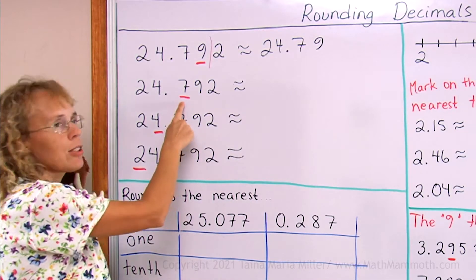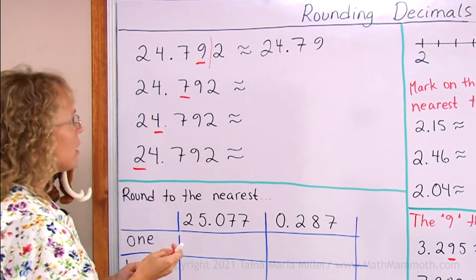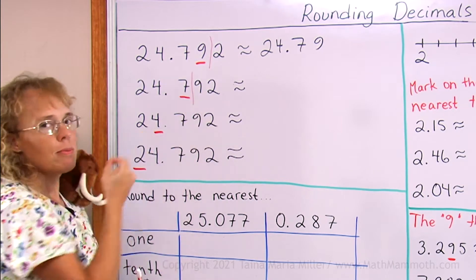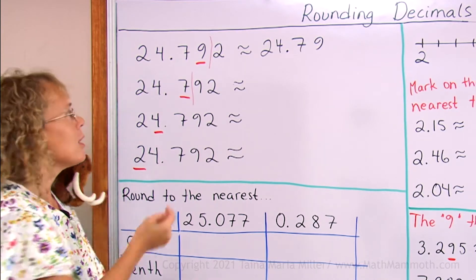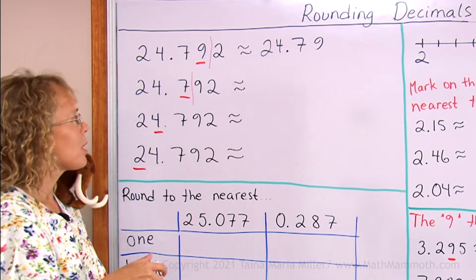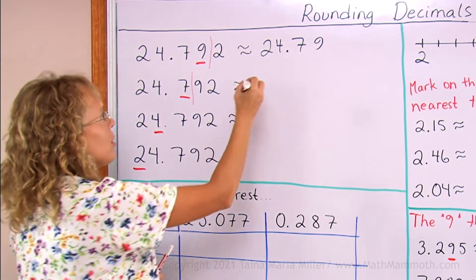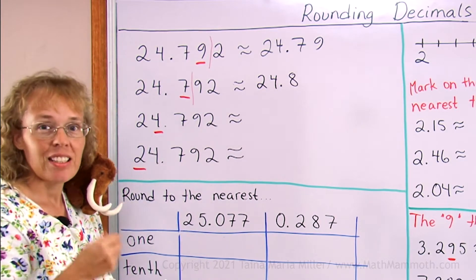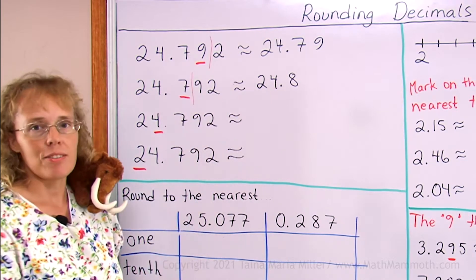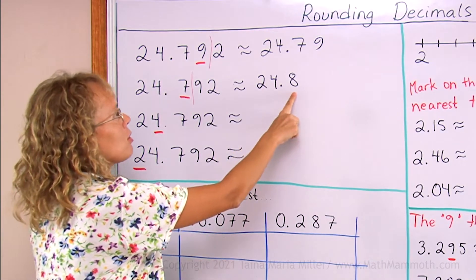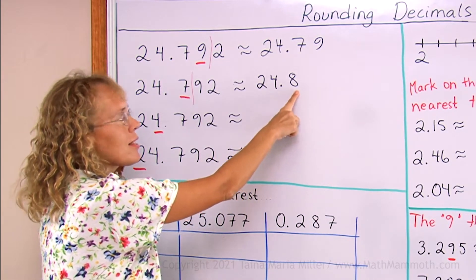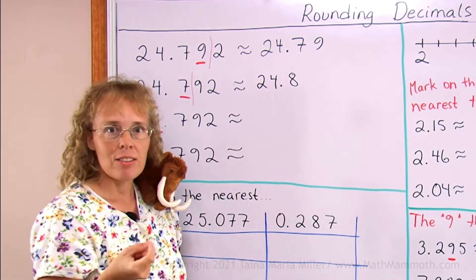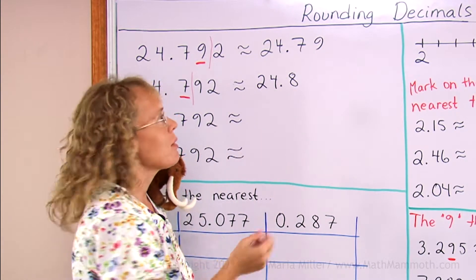Over here, if we are rounding to the nearest tenth, I'll draw my line here. I look at the next digit: 9 means I will round up, so the 7 will be increased by 1 and becomes 8. We get 24.8. The decimal is cut off at the line — we don't write anything after that. This was rounded to the nearest hundredth, so the hundredths digit is the last digit we write.